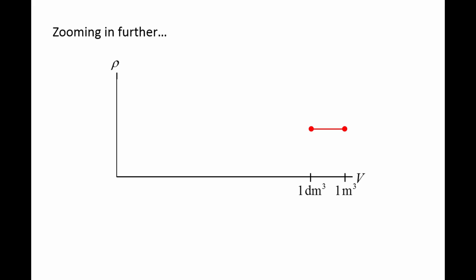If we measure the density of air at smaller and smaller volumes, we would see that the density does not change significantly even as you get to 1 cubic millimeter-sized volumes, since 1 millimeter is still much larger than the average distance between air molecules.